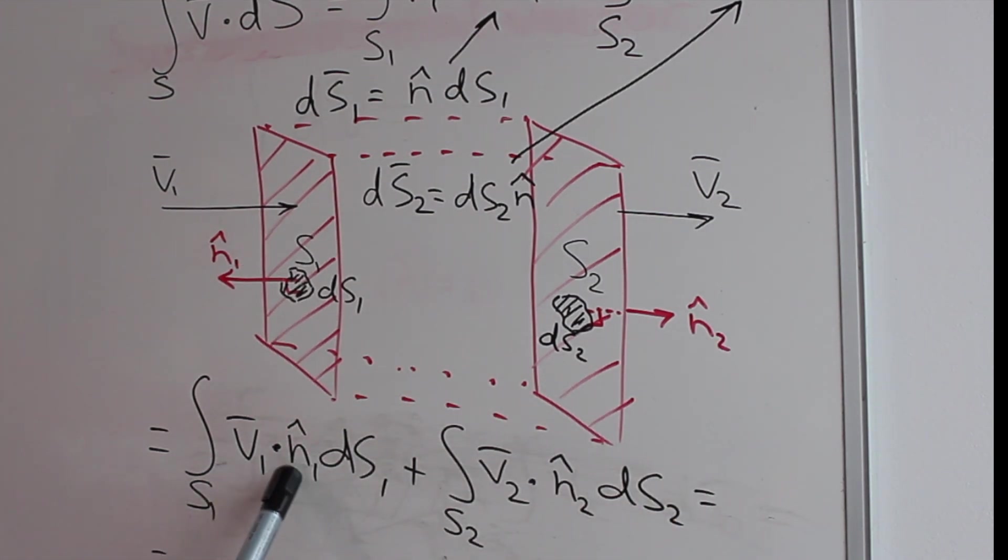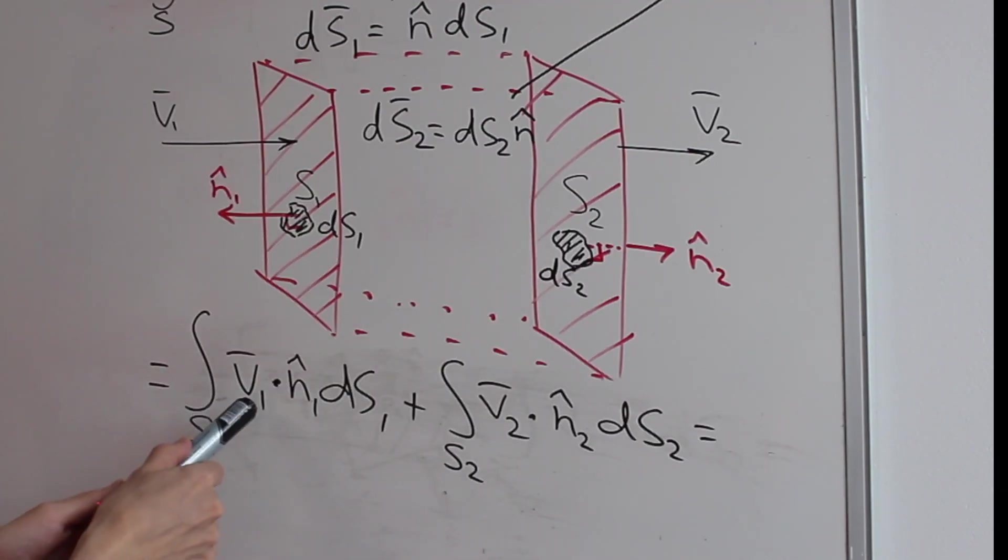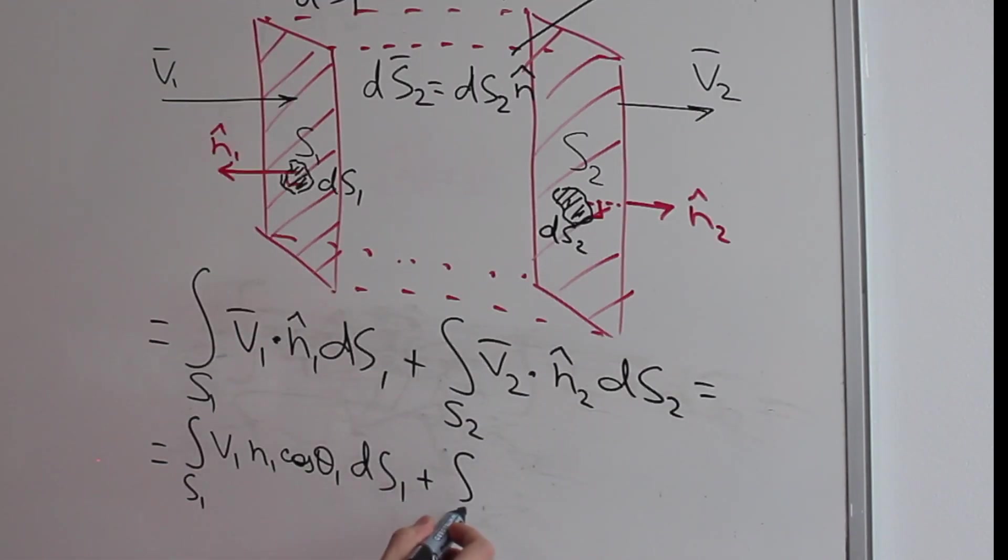And now what do you remember from the previous video about the dot product of two vectors. So it's going to be a product of these vectors v1 and n1 multiplied by the cosine of the angle between them. And copy the second integral in the same way v2 n2 cosine of theta 2 ds2.